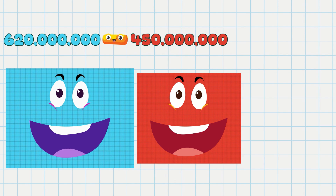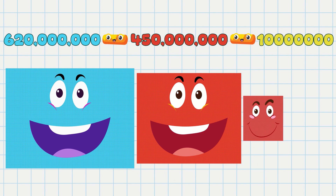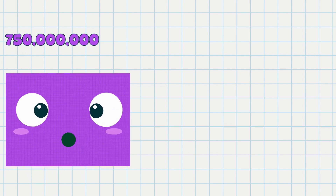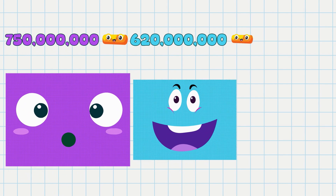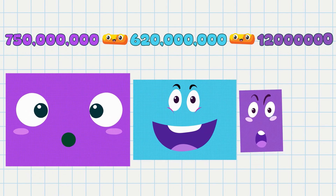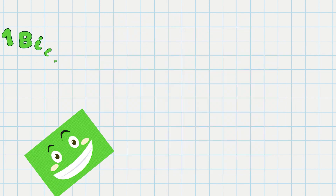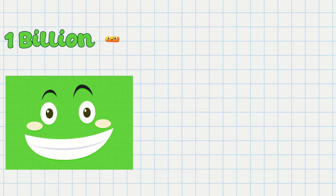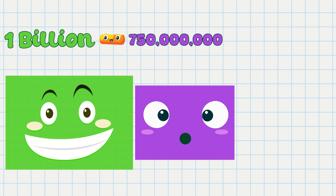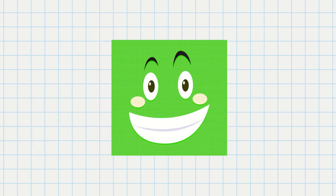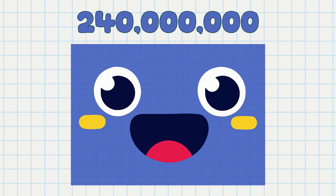...450,000 minus 10,000,000 equals 160,000. 750,000 minus 620,000,000 minus 12,000,000 equals 118,000,000. Minus 750,000,000 minus 10,000,000 equals 240,000,000.